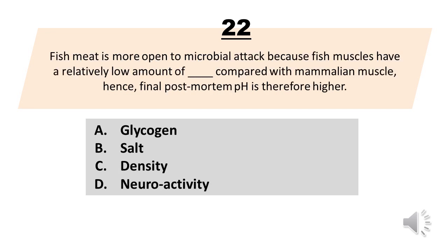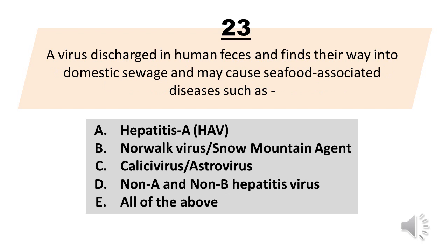Fish meat is more open to microbial attack because fish muscles have a relatively low amount of blank compared with mammalian muscle; hence, final post-mortem pH is therefore higher. A. Glycogen. B. Salt. C. Density. D. Neuroactivity. The correct answer is Letter A, Glycogen.